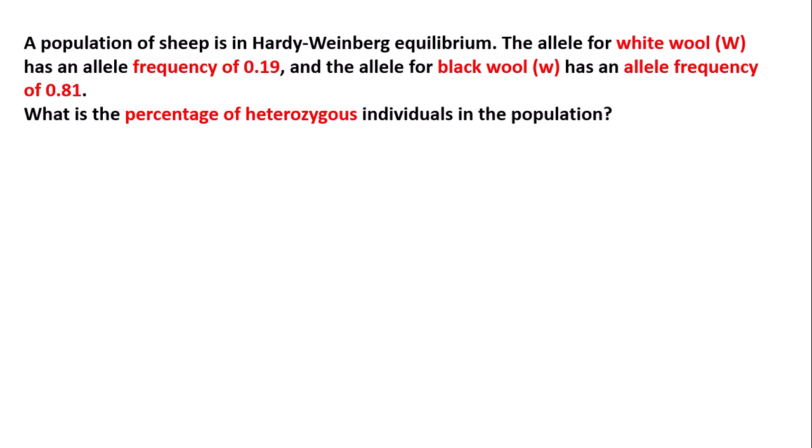Now for another example. A population of sheep is in Hardy-Weinberg equilibrium. The allele for white wool, capital W, which is the dominant allele, has an allele frequency of 0.19. The allele for black wool, lowercase w, has an allele frequency of 0.81. What is the percentage of heterozygous individuals in the population? As we saw in the Hardy-Weinberg equation, 2pq represents the heterozygous frequency.